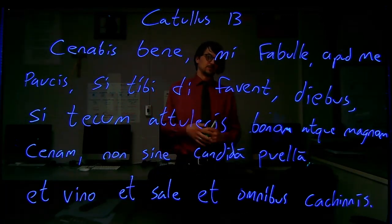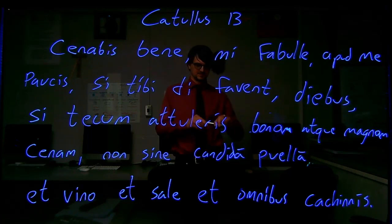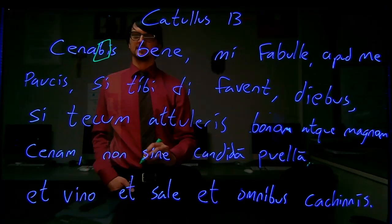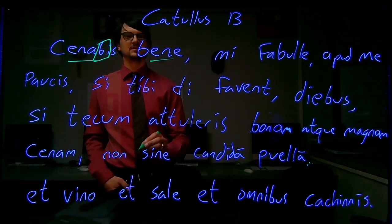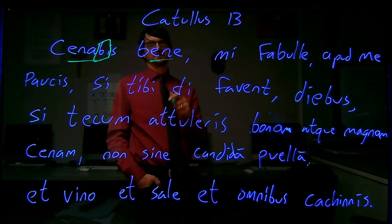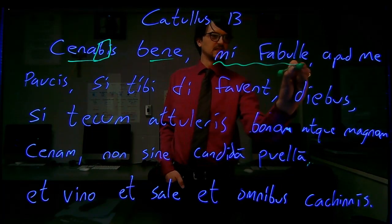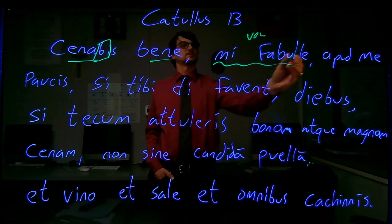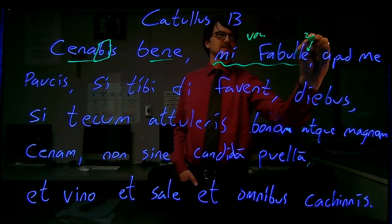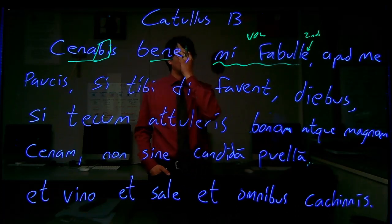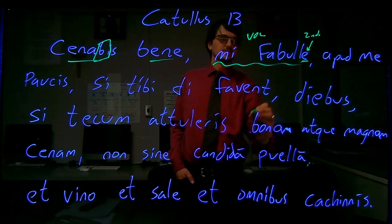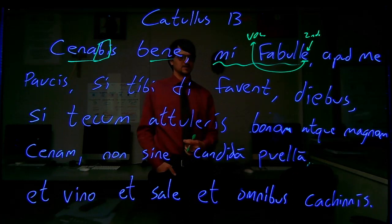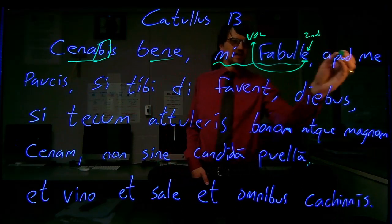So pretty famous poem here from Catullus, starting off, you might actually hear it referred to with this future tense, you will dine well. So cenabis bene, you will dine well, and then of course, like we have at a lot of the beginning of poems, vocative up here, mi Fabule. You know it's vocative because of the e ending on a second declension noun, proper name Fabuleus, and that e ending is not usually in the second declension, so you have to think outside the box and think vocative.